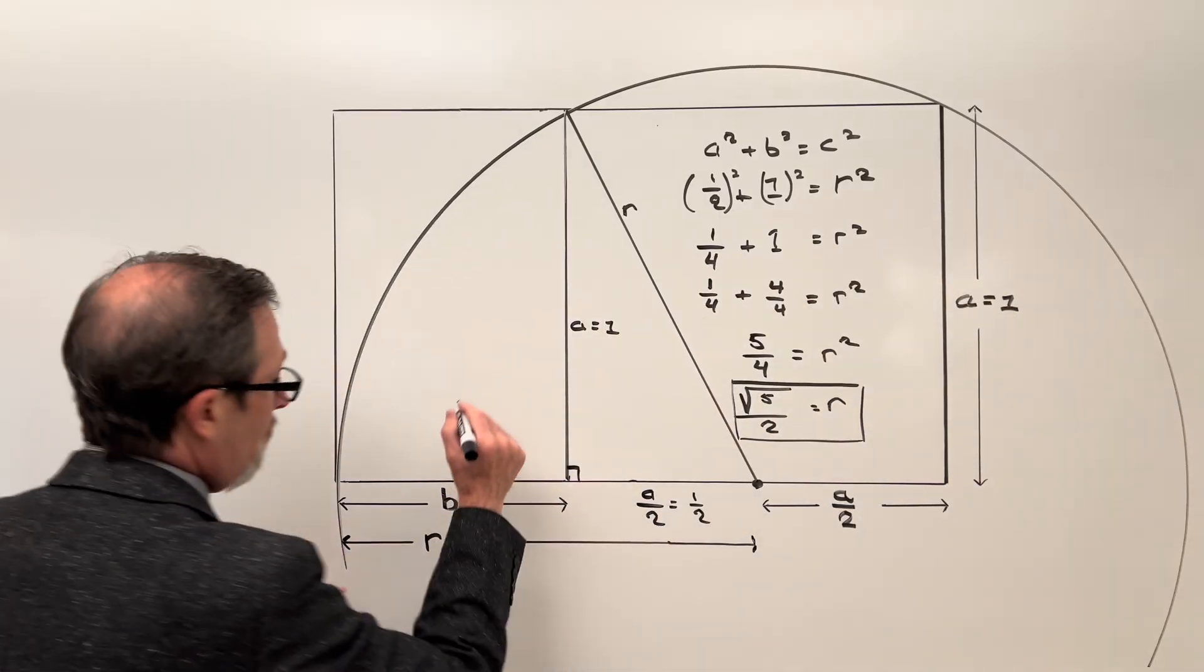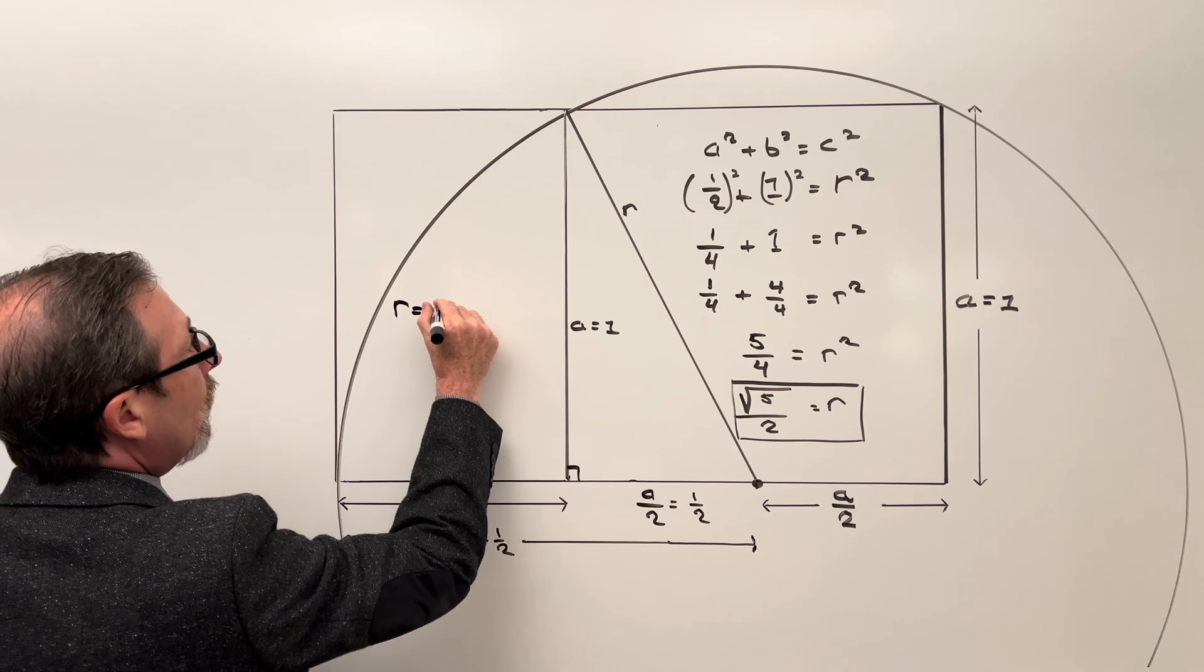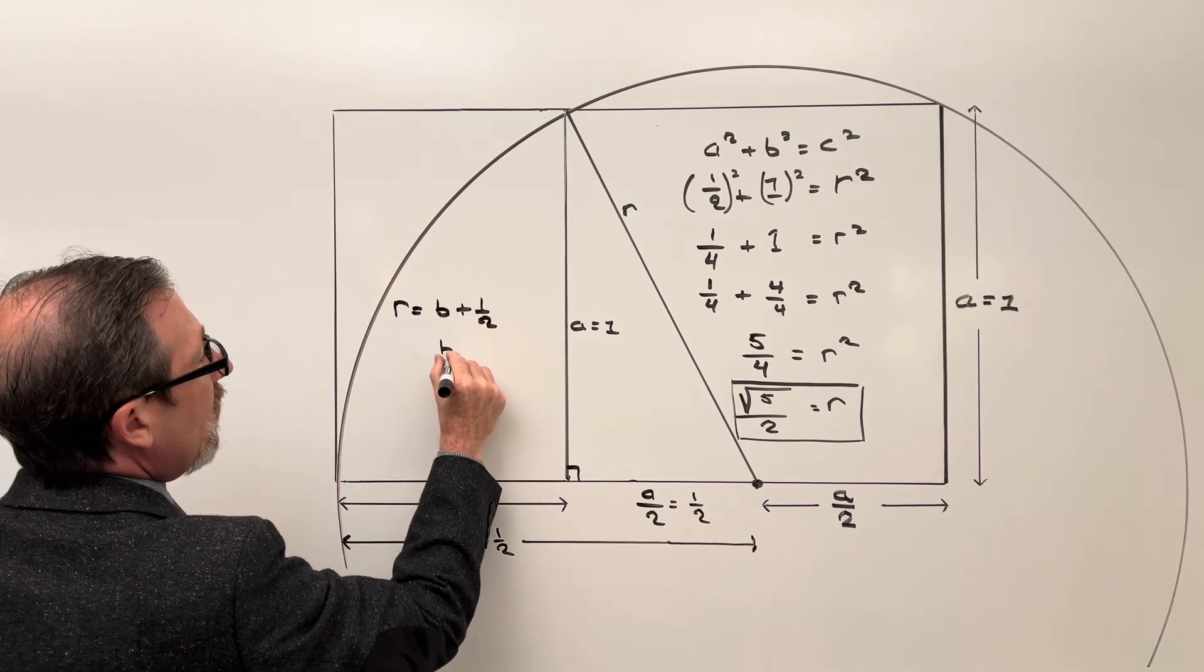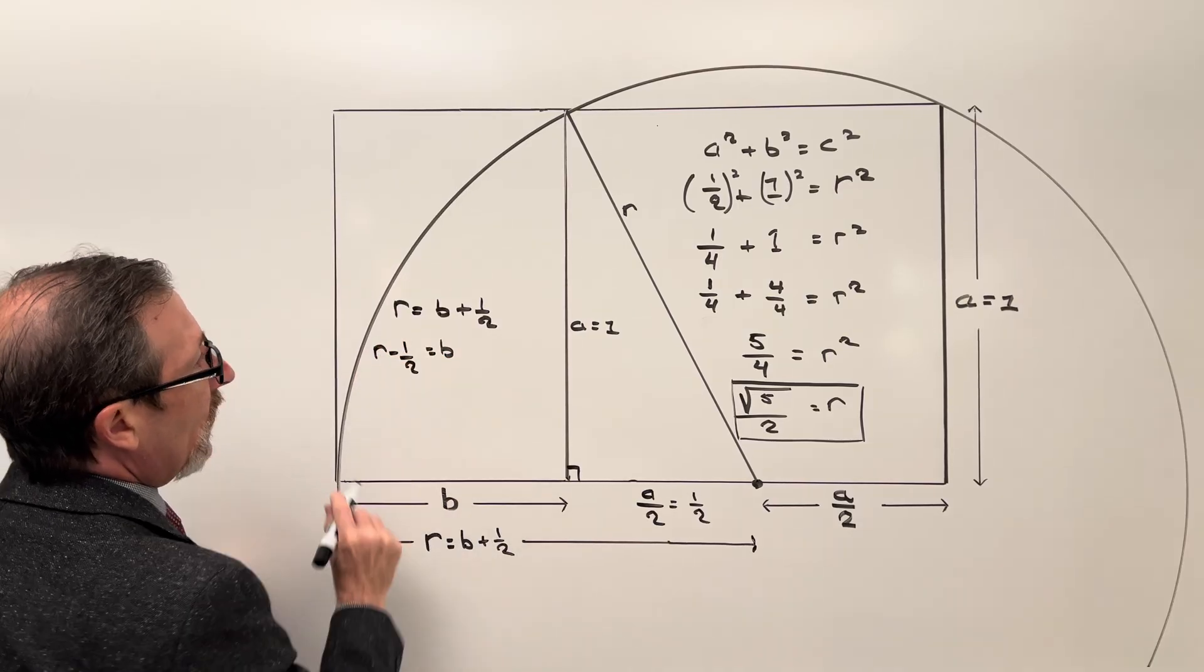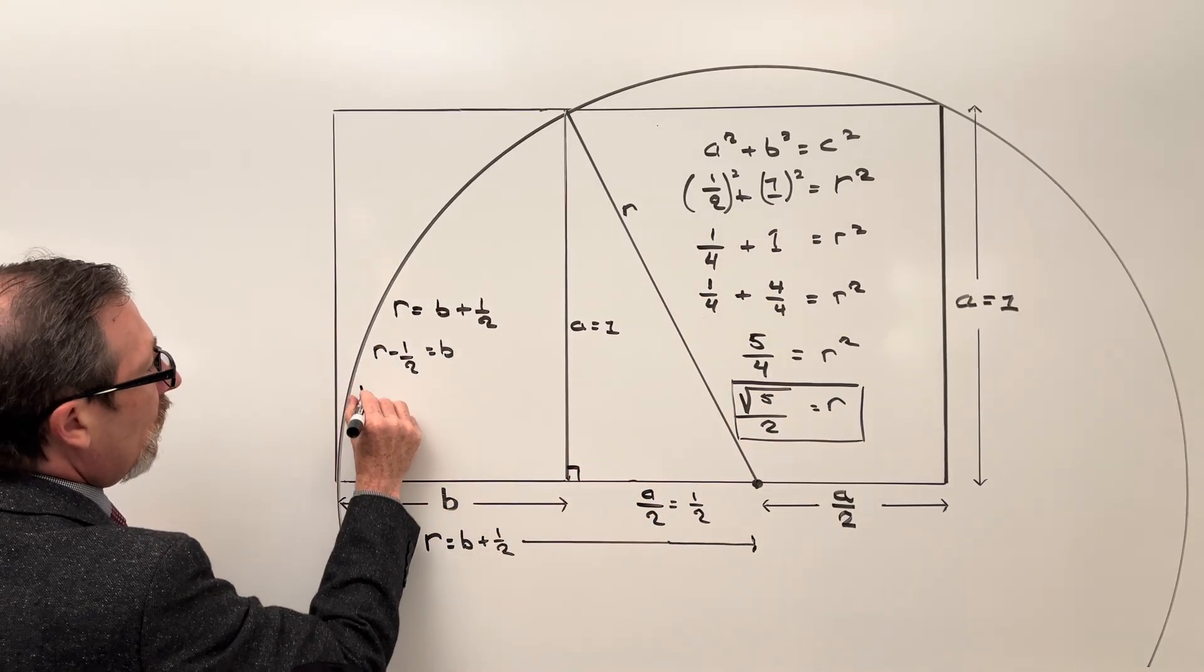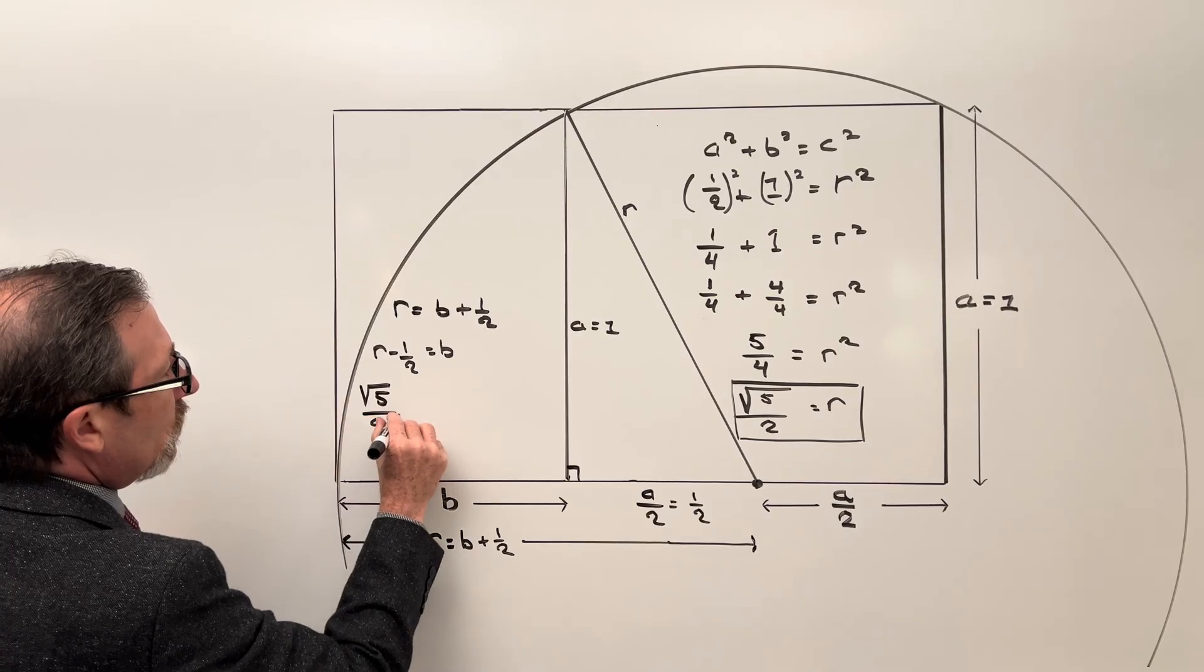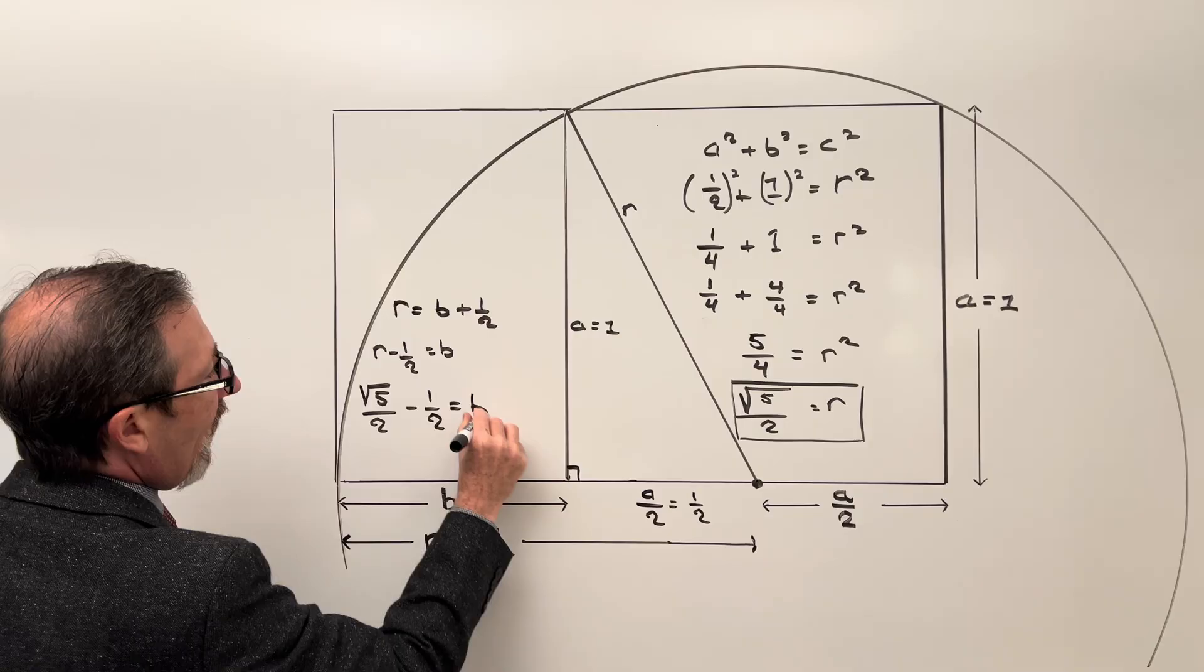Maybe I'll move that up here. So I can say if R equals B plus one half, B can be thought of as being R minus one half. And we found R is going to end up being our square root of five all over two minus one half. And that would be side B.